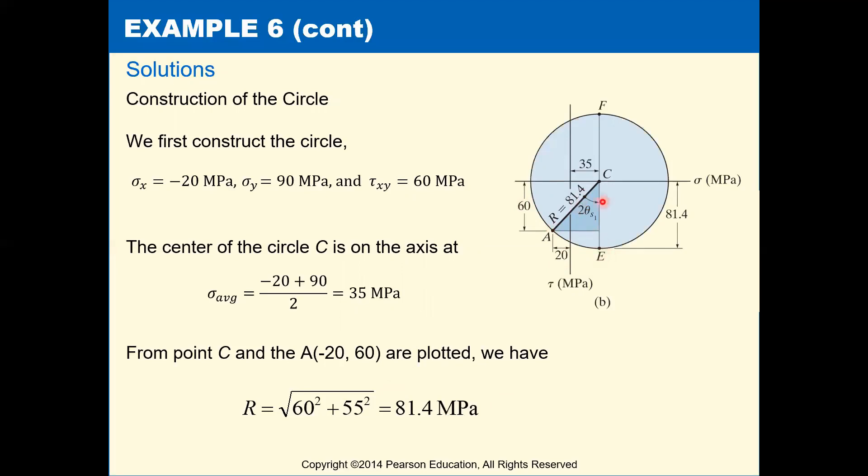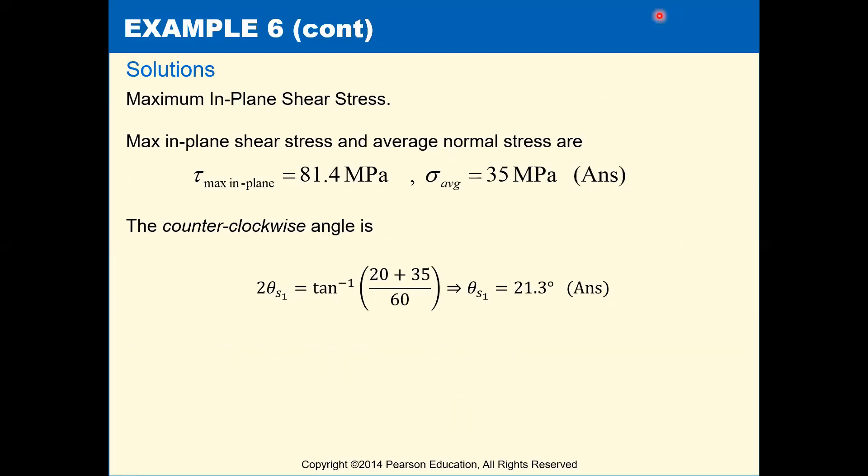Our max in-plane shear is going to be located at point E here, which is at sigma average comma max in-plane shear. And we know since this is just on our circle, that means we're just a radius away. So its y-coordinate is our radius, 81.4. So our max in-plane shear is 81.4 megapascals.